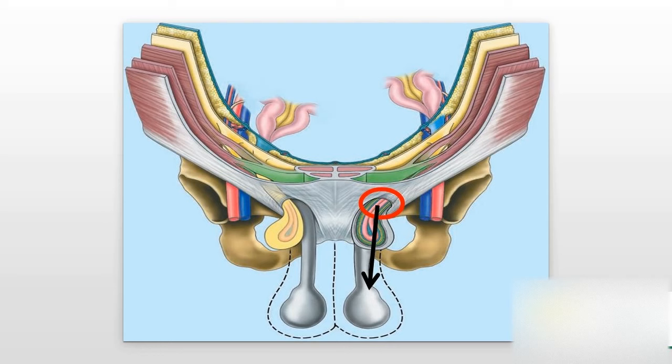This kind of hernia is called an indirect hernia because the bowel had to go through the entire length of the cylinder — through its internal ring, through the actual canal, and finally out through the external ring.